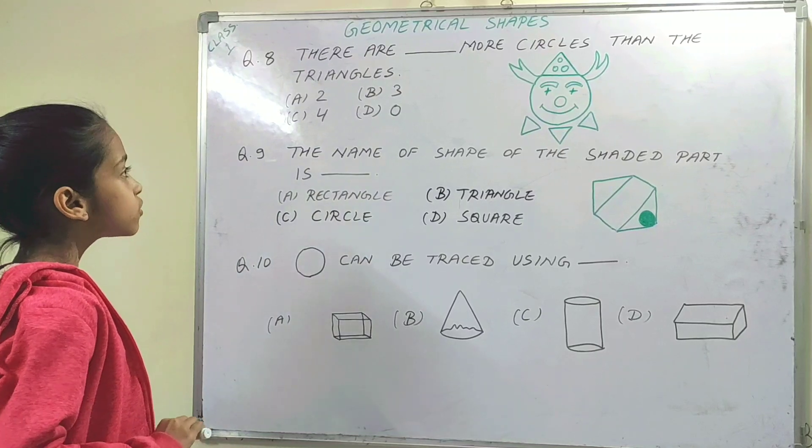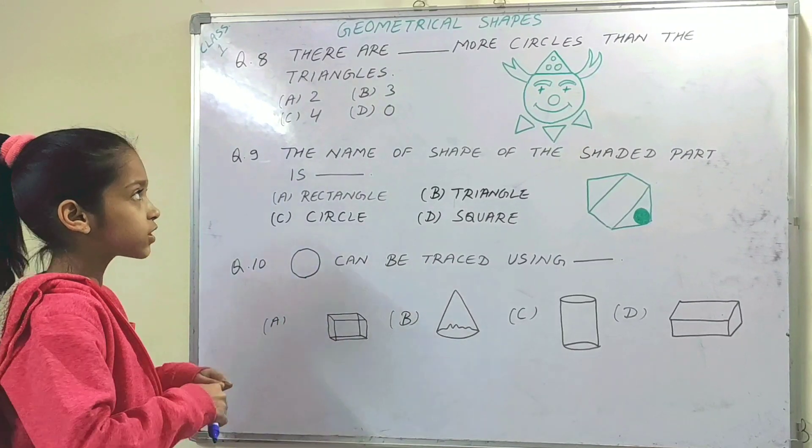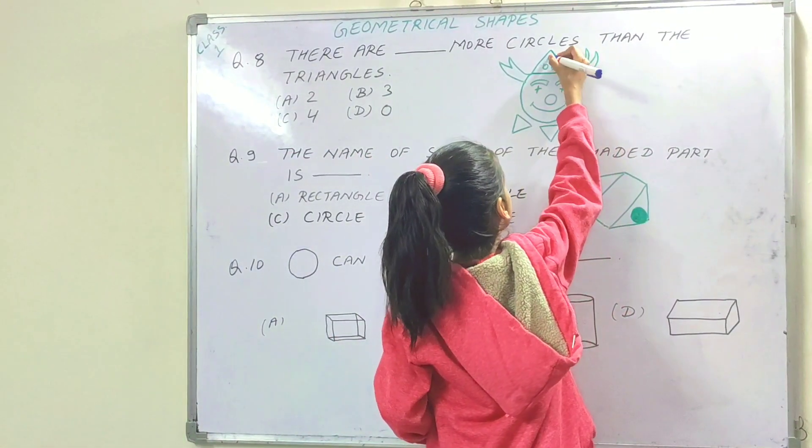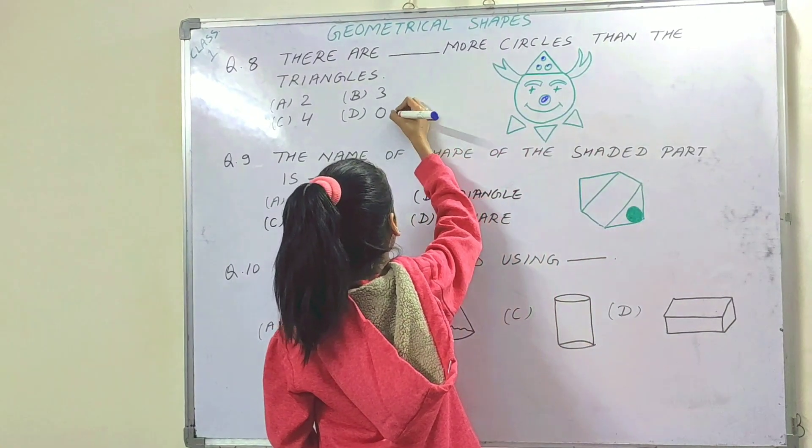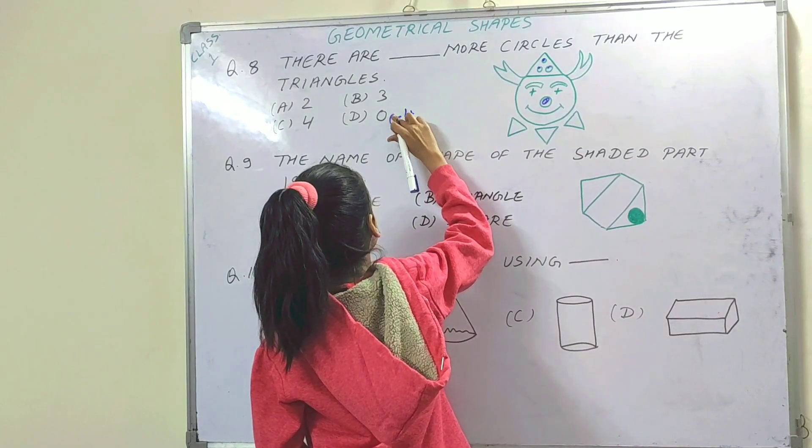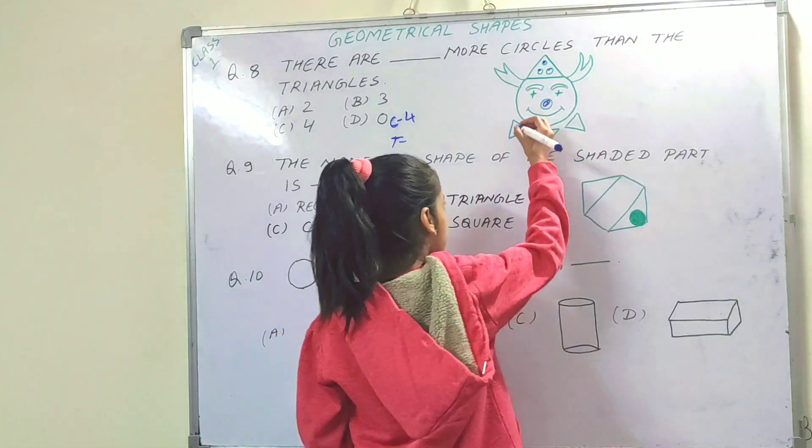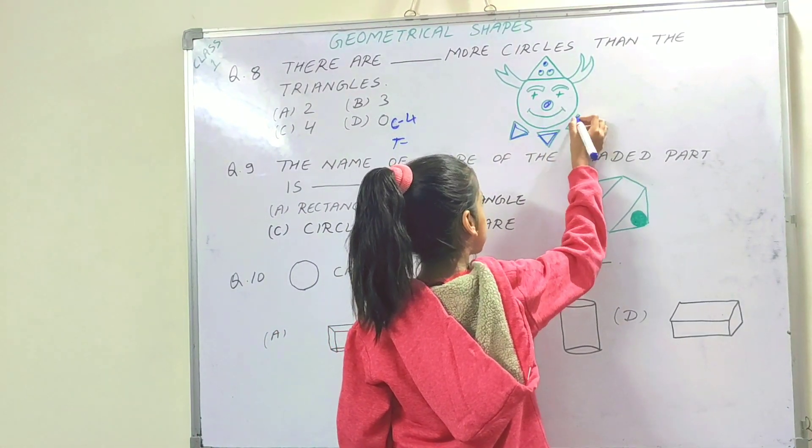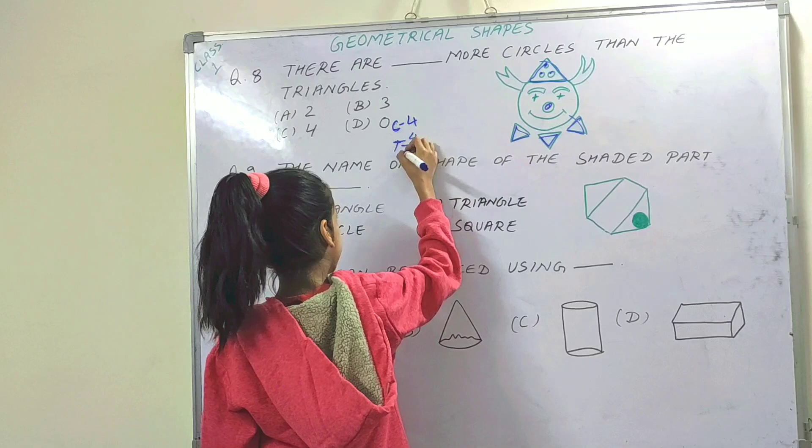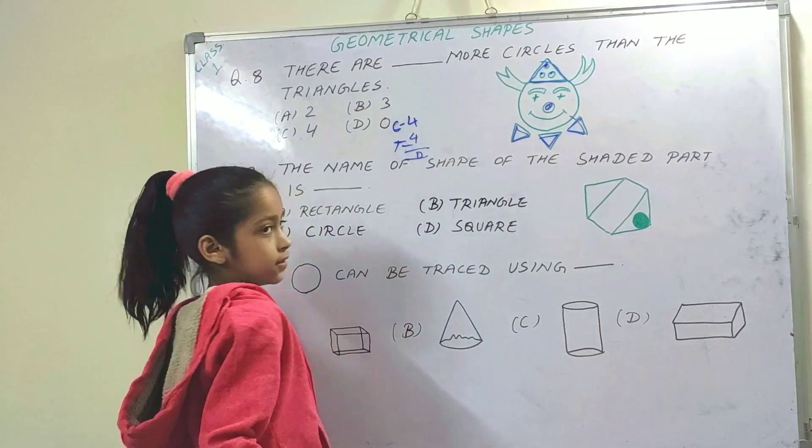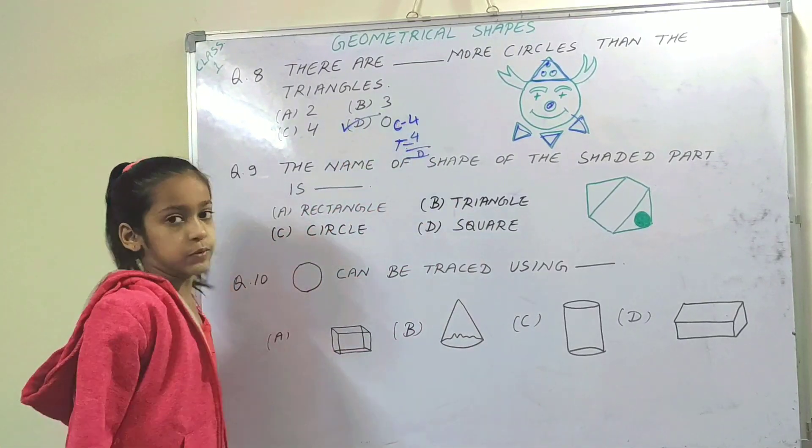There are dash more circles than triangles. First, we will count how many circles and how many triangles. Circles: 1, 2, 3, 4. Four circles. Then we will count triangles: 1, 2, 3, 4. Four triangles. Now, four minus four is zero. So option is zero. Next question.